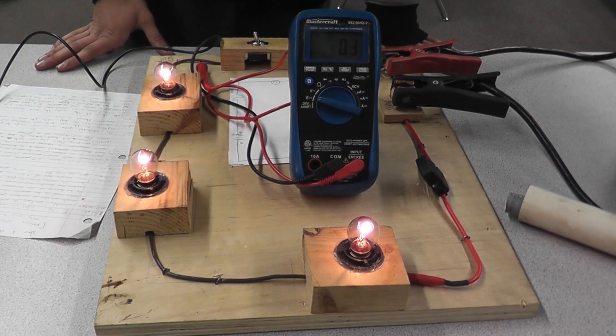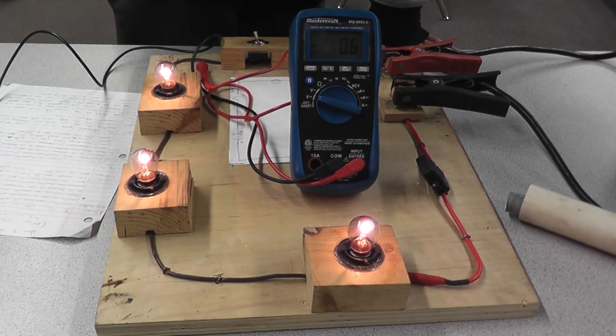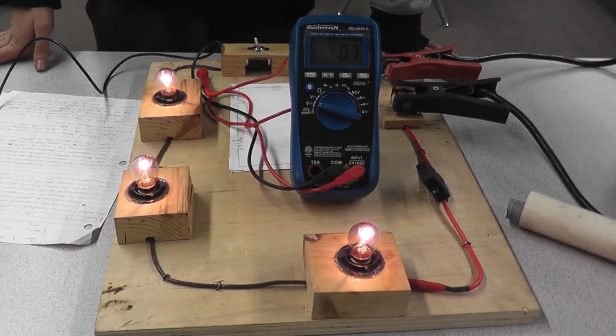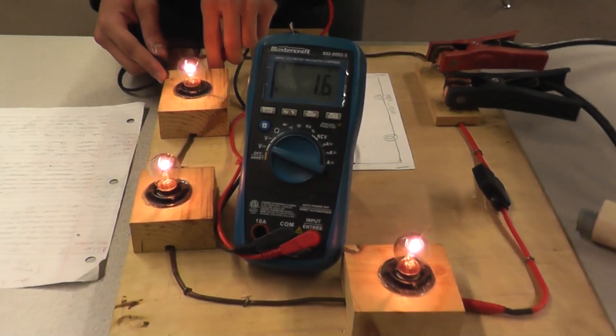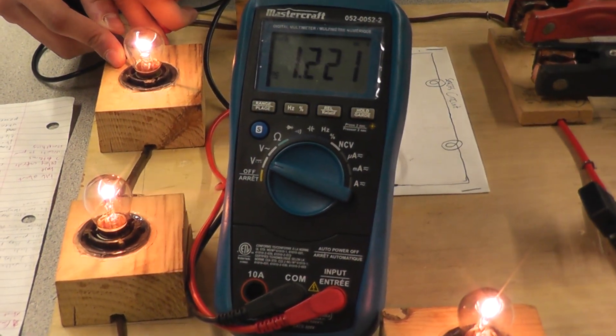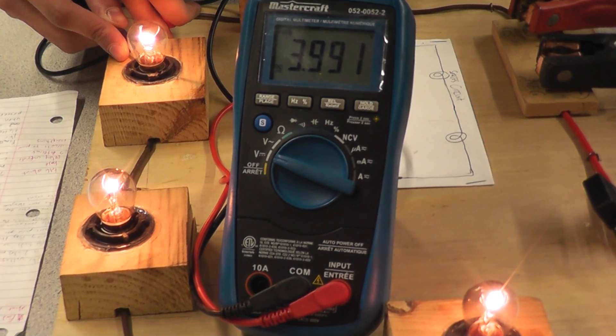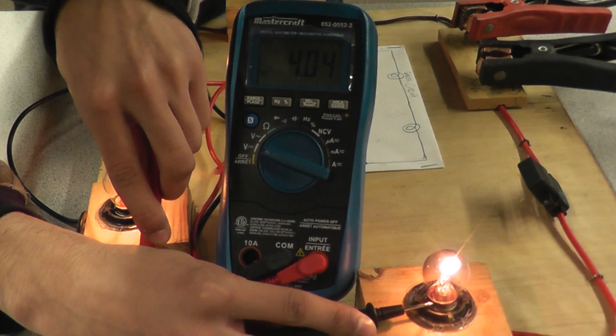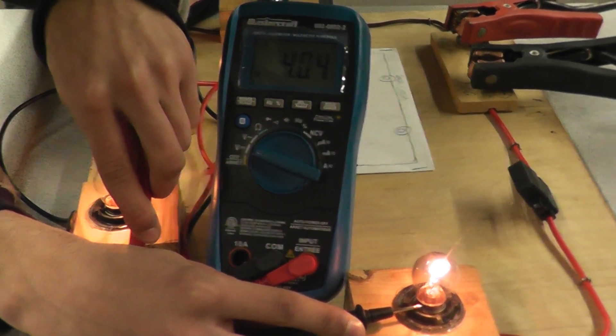In a series circuit, the voltage is divided among each of the loads. Since there are 12 volts coming from the source, each bulb should be getting around 4 volts. As you can see, the voltage is 4. And this bulb is also around 4 volts.